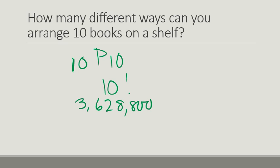Now, if I only wanted to put five of them on the shelf, then it would be 10 permutations or 10 things taken five at a time. And that would be a total different number, and that would be 30,240. Now, if I was just grabbing five books off a shelf and taking them someplace with no particular order, then that would be a combination.